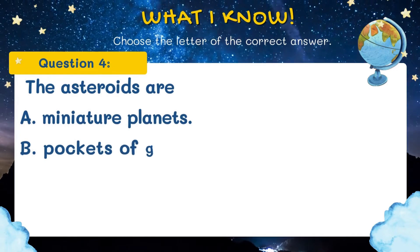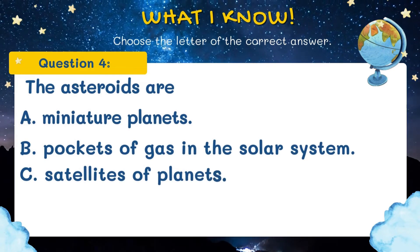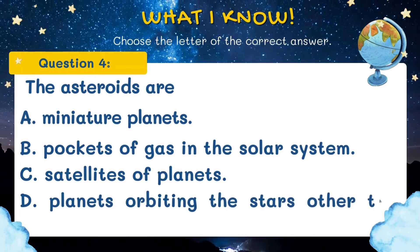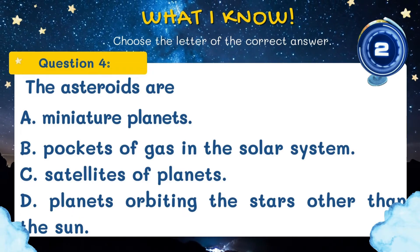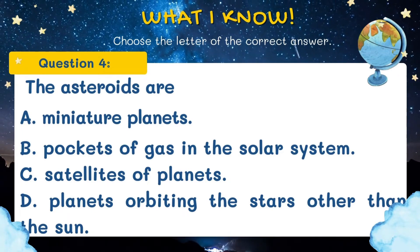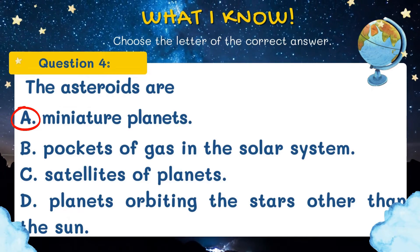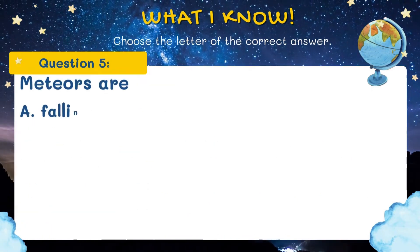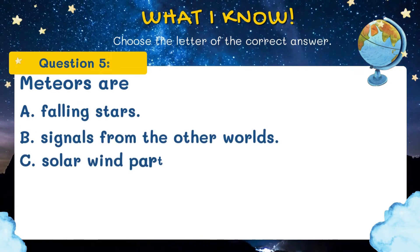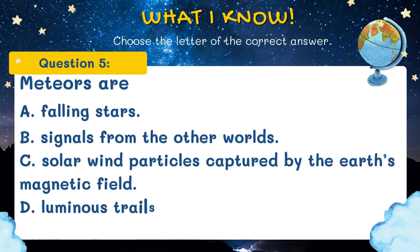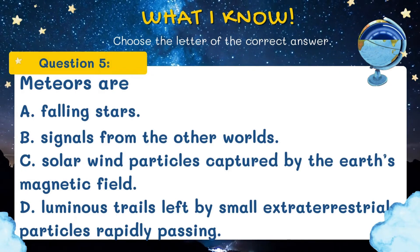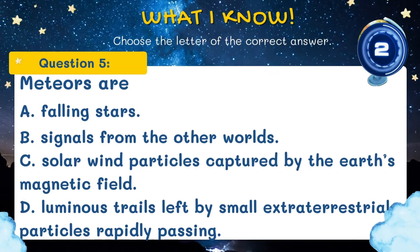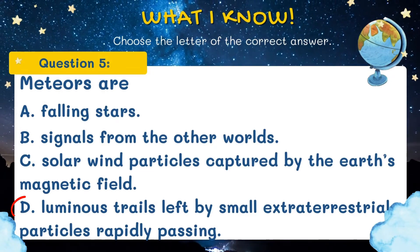Question number four: The asteroids are A. Miniature planets, B. Packets of gas in the solar system, C. Satellites of planets, or D. Planets orbiting the stars other than the Sun. The correct answer is letter A, Miniature planets. Question number five: Meteors are A. Falling stars, B. Signals from the other worlds, C. Solar wind particles captured by the Earth's magnetic field, or D. Luminous trails left by small extraterrestrial particles rapidly passing. The correct answer is letter D, Luminous trails left by small extraterrestrial particles rapidly passing.